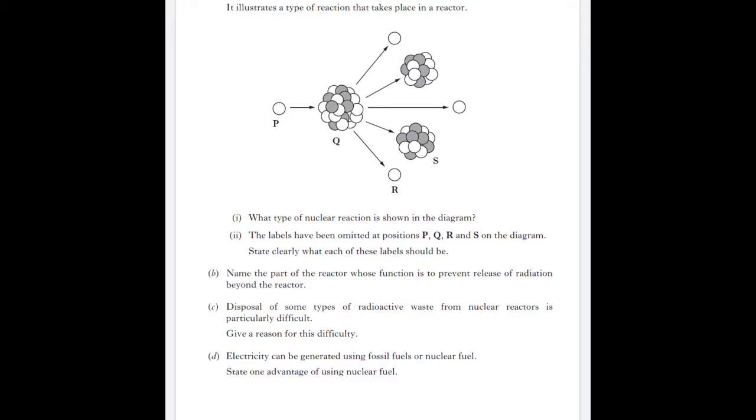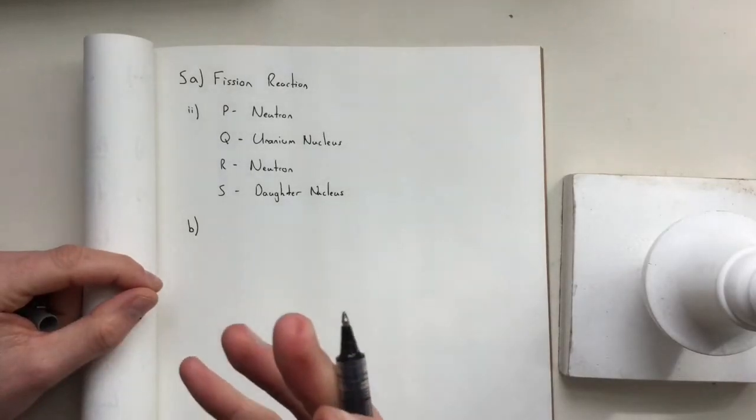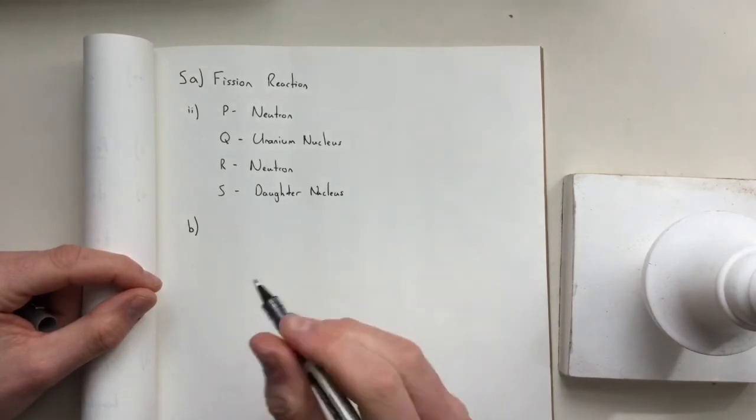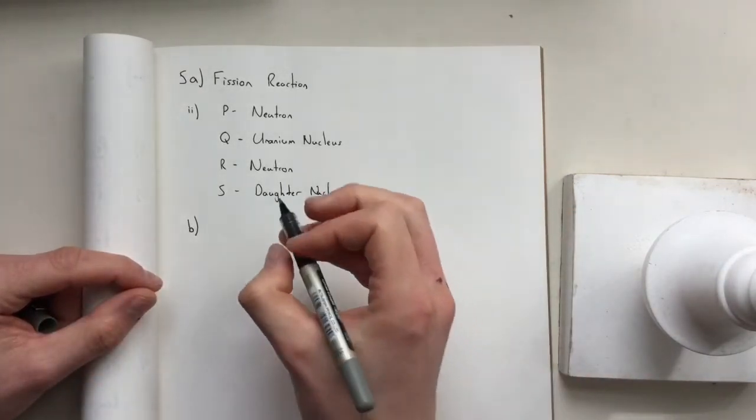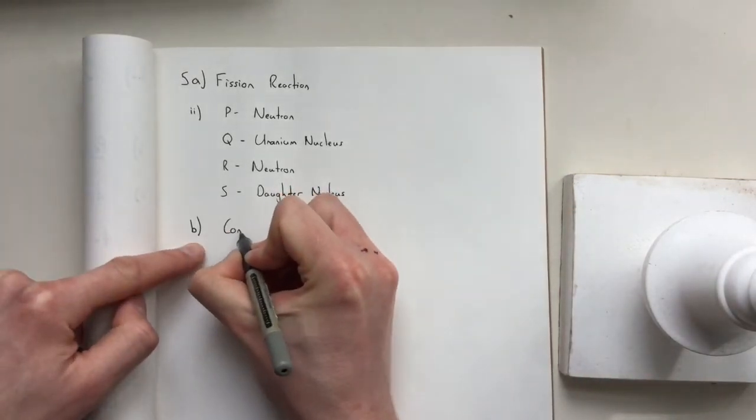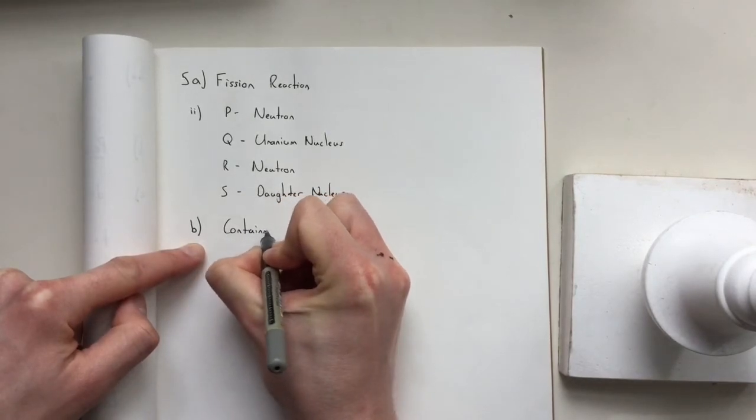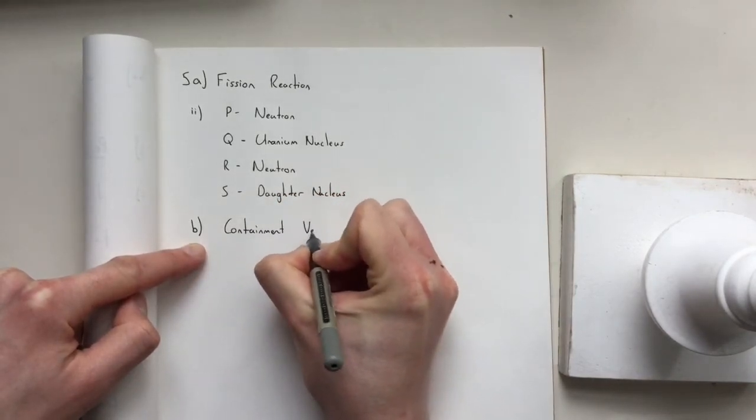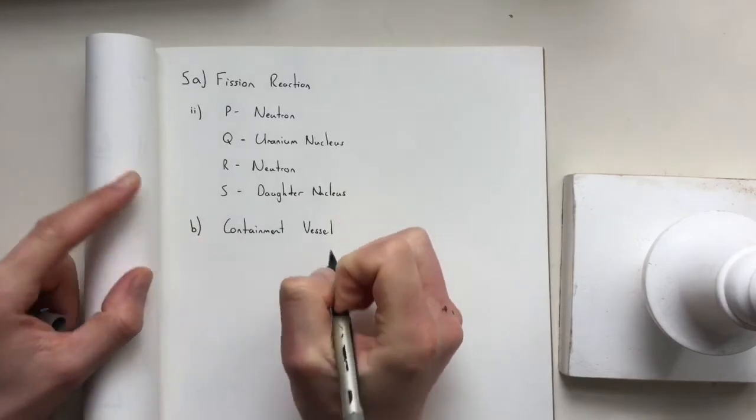B asks, name the part of the reactor whose function is to prevent release of radiation beyond the reactor. We should know from our nuclear models that the thing around the core is a containment vessel.